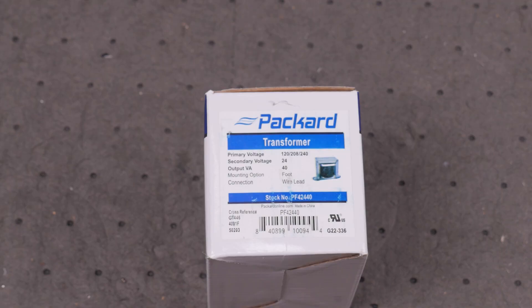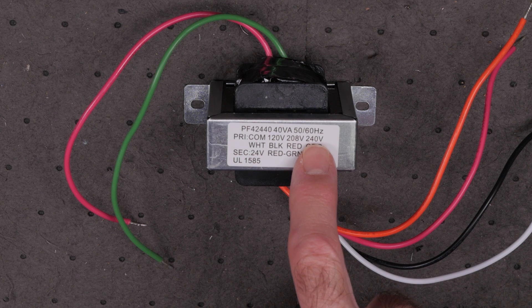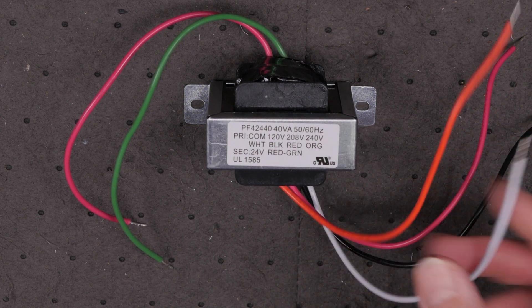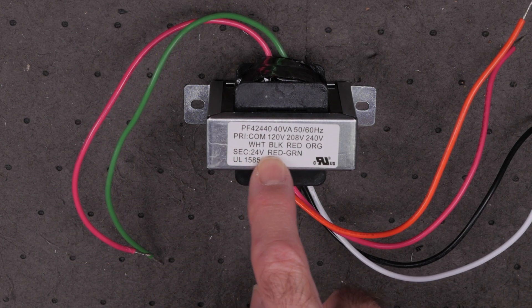This is the transformer I'm using. On the primary side, we'll use the white common wire and the orange wire for 240 volts. The red and green wires will be our 24 volts secondary output.